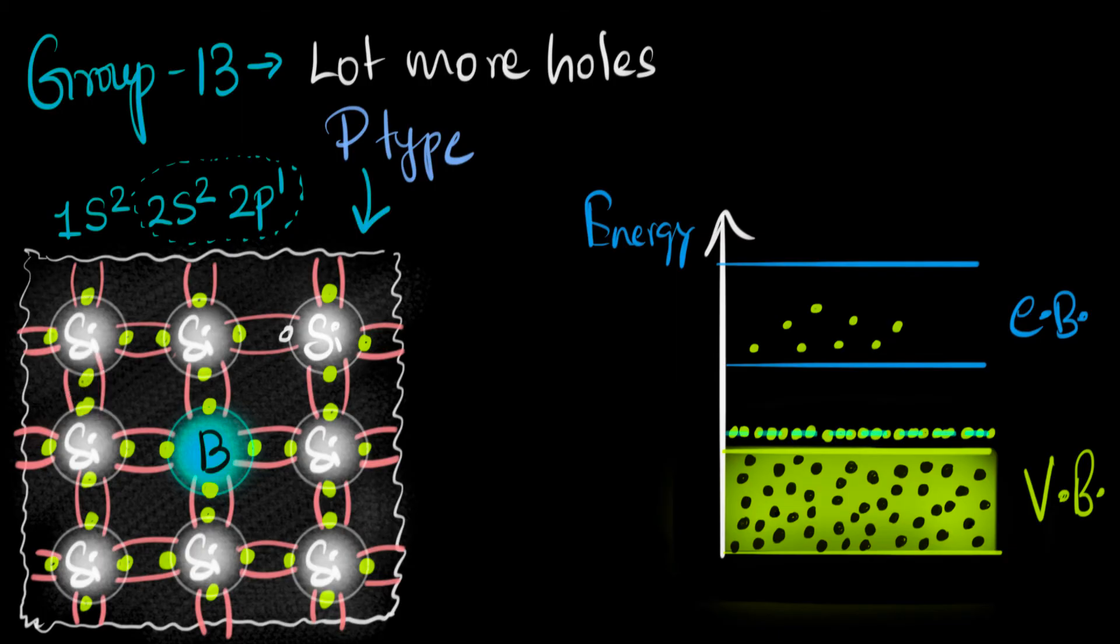Whenever someone says P-type, what comes to mind? P tells me there are a lot more positive type. Positive type means holes. So a lot more holes—number of holes is way, way larger than number of electrons.